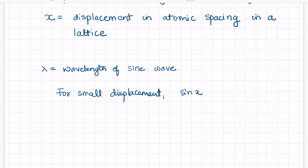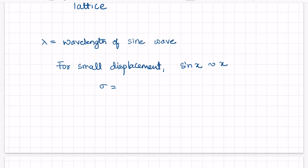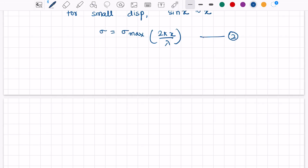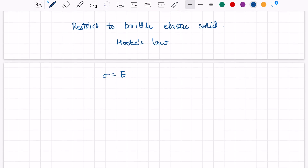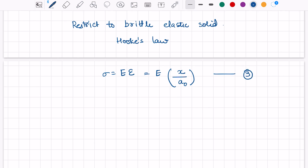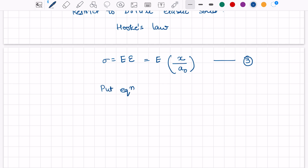For small displacement, sin(x) is nearly equal to x, so we can write sigma equals sigma-max times (2πx / λ) — this is the second equation. If we restrict ourselves to only brittle elastic solids, then from Hooke's law we can write sigma equals elastic modulus times strain, which equals elastic modulus times displacement divided by the initial separation between the two planes of atoms — this is the third equation.